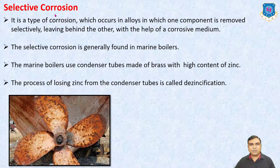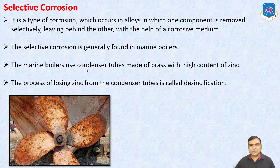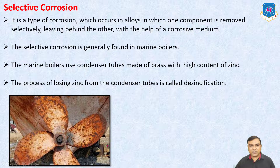The last is Selective Corrosion. It is a type of corrosion which occurs in alloys in which one component is removed selectively, leaving behind the other with the help of the corrosion medium. Selective corrosion is generally found in marine boilers. Marine boilers use condenser tubes made of brass with high content of zinc. The process of losing zinc from the condenser tube is called de-zincification. This type of corrosion is generally seen below sea level, in underwater environments, where machines and parts of boats and ships are corroded by de-zincification. This type of corrosion is known as selective corrosion.